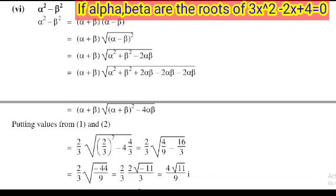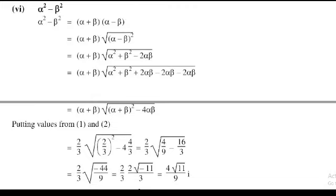So (2/3) × √(-44/9). Since 44 = 4 × 11, we have (2/3) × 2√(-11)/3 = 4√(-11)/9. Square root of -1 is iota, so the required solution is 4√11 iota / 9.